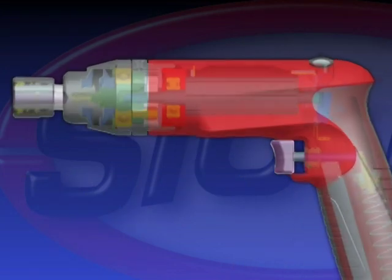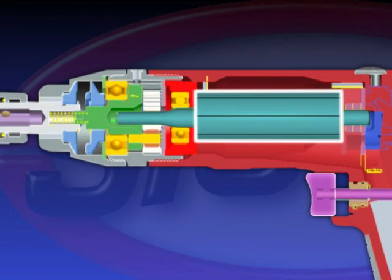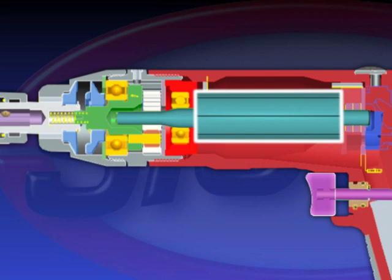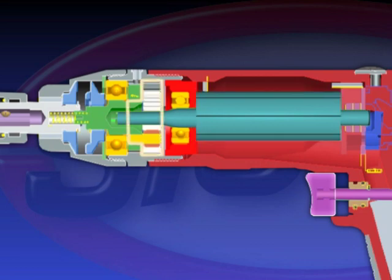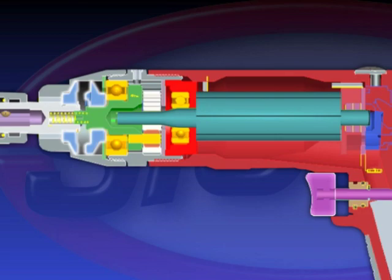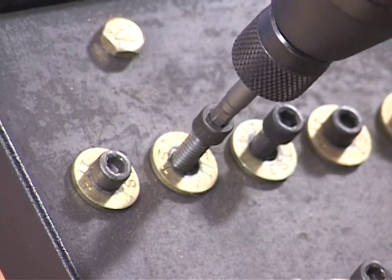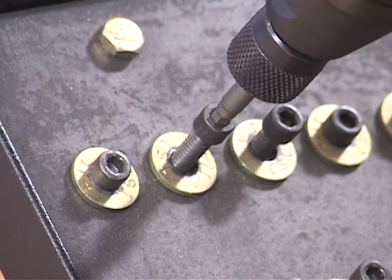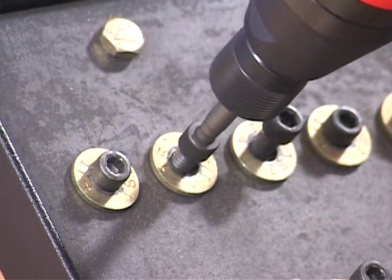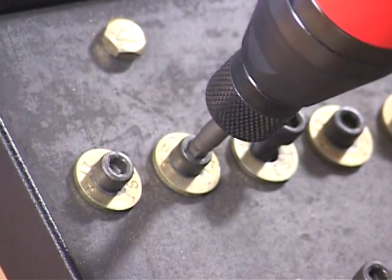The operation of a screwdriver is an air motor and planetary gearing used to drive a clutch spindle, producing torque in a fastener. The action of the torque creates clamp load in an assembly.